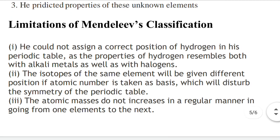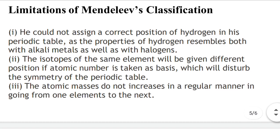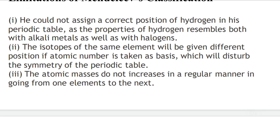Second, isotopes of the same element were given different positions, which disturbed the symmetry of the table. Third, the atomic masses of elements did not increase in a regular manner when going from one element to the next — the expected increasing trend was not consistently followed.